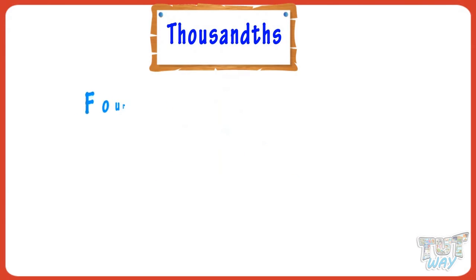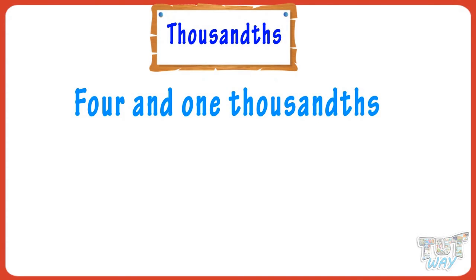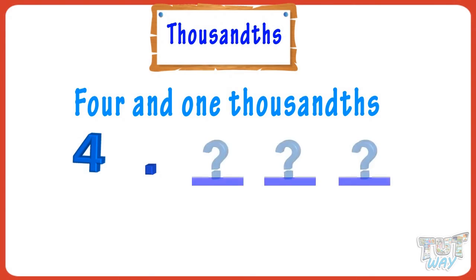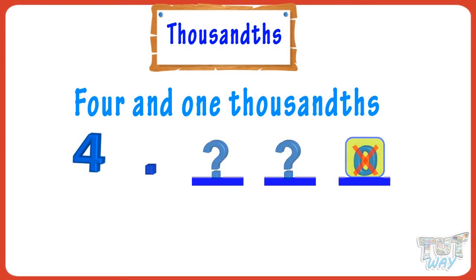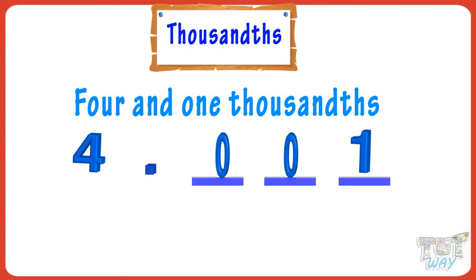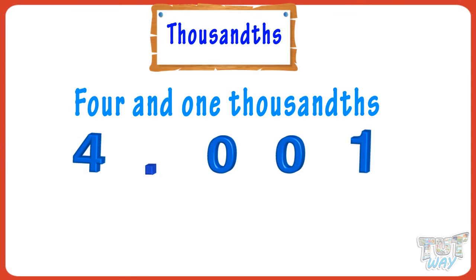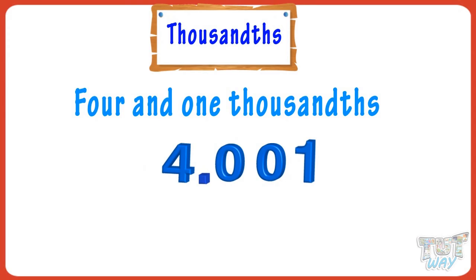Now how will you write four and one thousandths? First write four. Now write 'and' — that is decimal — so put a decimal. One thousandths means there are three digits after the decimal, and the last digit is not zero. So place one at the third place, and zeros will hold the places where there are no digits. So our number is four point zero zero one, which is four and one thousandths.